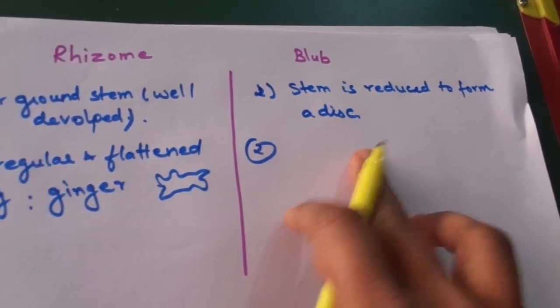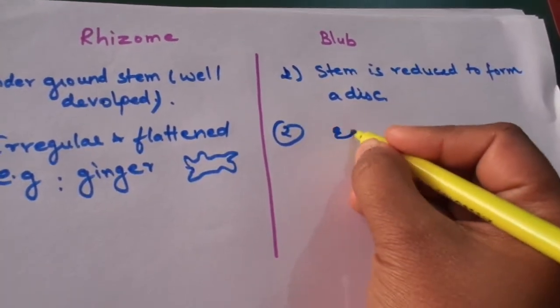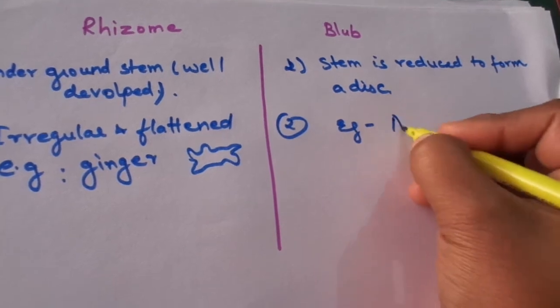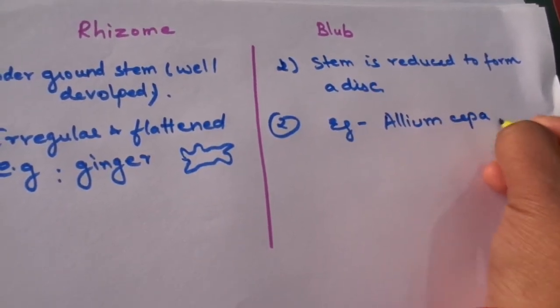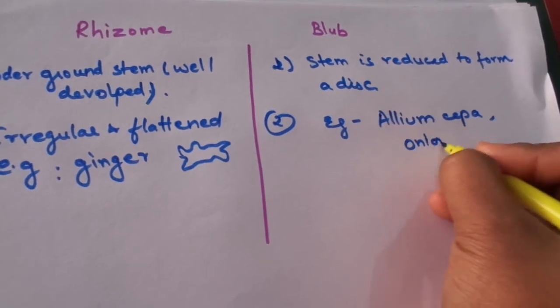However, as we all know that in the first difference, the stem is reduced to form a disc. So, the example here is Allium cepa that is also known as onion.